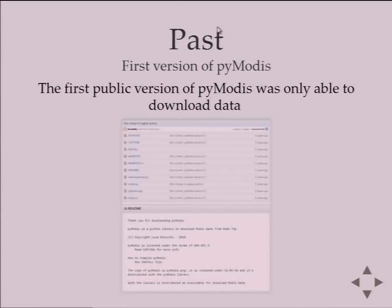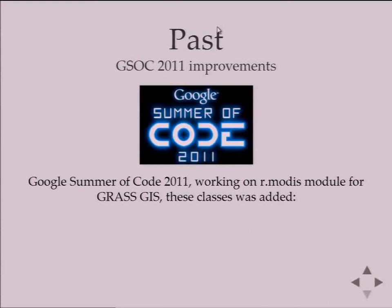After some time I obtained the first version of PyMODIS, which was only able to download data — just a replacement for Marcus's Bash scripts. The first version was released in 2010. Online you can find version 0.2 but not 0.1, because 0.1 was on my laptop and I forgot to upload it to the code repository.